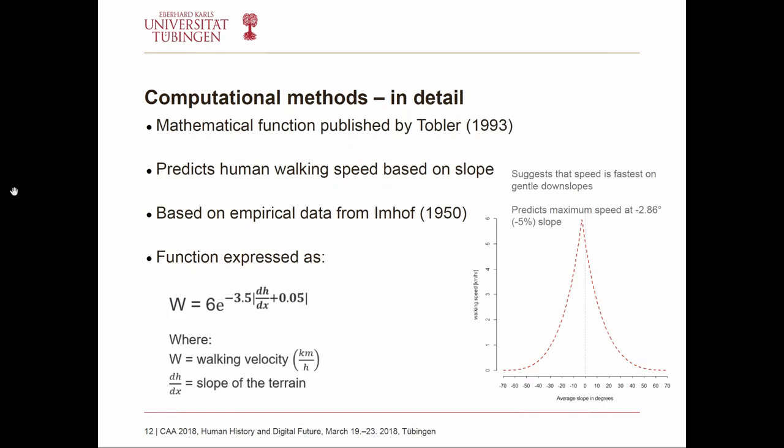A short note on the Tobler hiking function: it is a mathematical function published by Tobler in 1993 that predicts human walking speed based on slope. It is based on empirical data from a large dataset of marching data from soldiers. It is an exponential function where walking velocity is calculated based on slope gradient in the exponent. The ideal case shows the fastest speed on a gentle slope of around five degrees — either uphill or downhill.